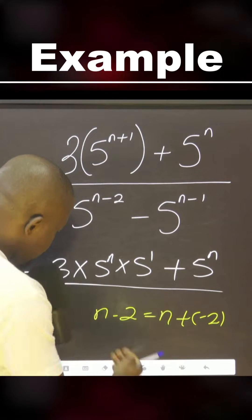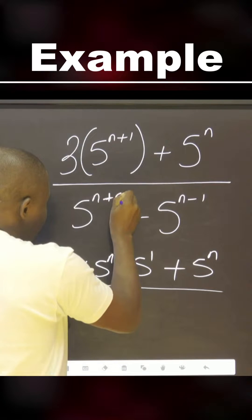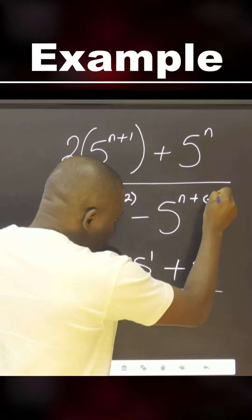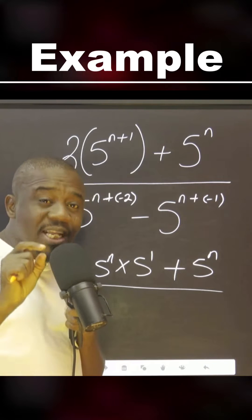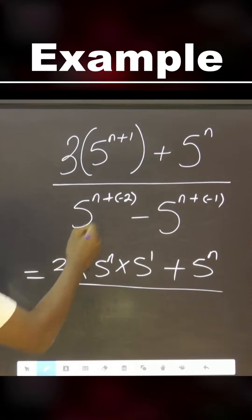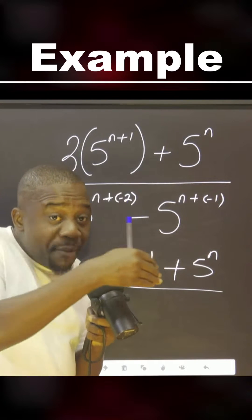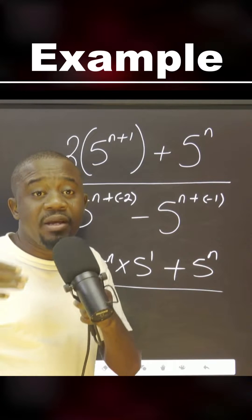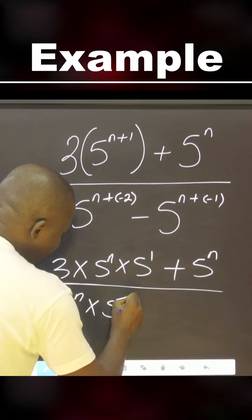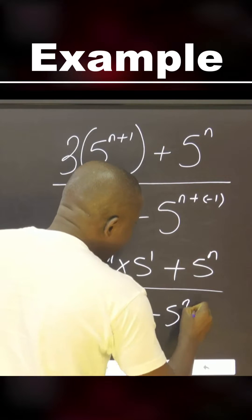I can simply come here now and put plus here, say minus 2. I can also say plus minus 1. The reason I'm bringing the plus is because I want to use multiplication rather than division. Now I'll rewrite this as 5^n multiplied by 5 raised to power minus 2, minus 5^n multiplied by 5 raised to power minus 1.